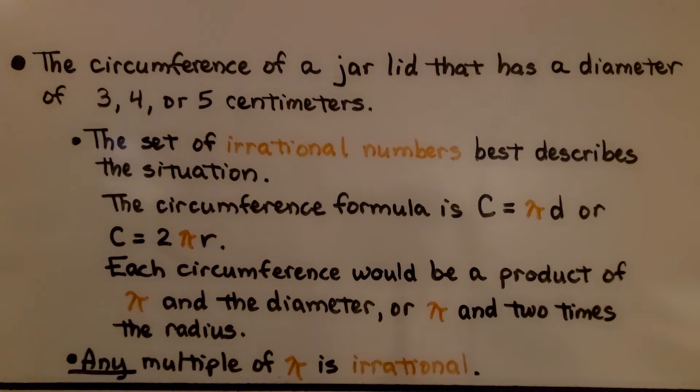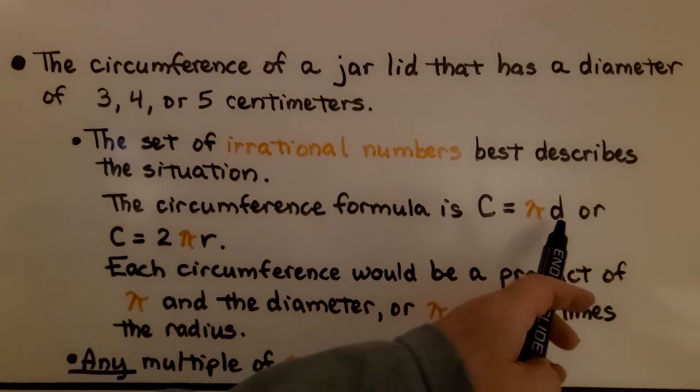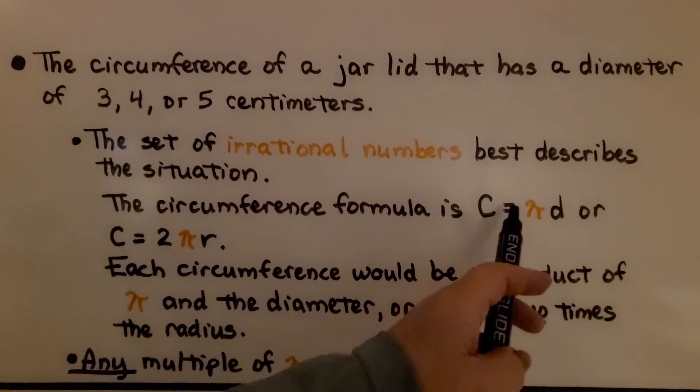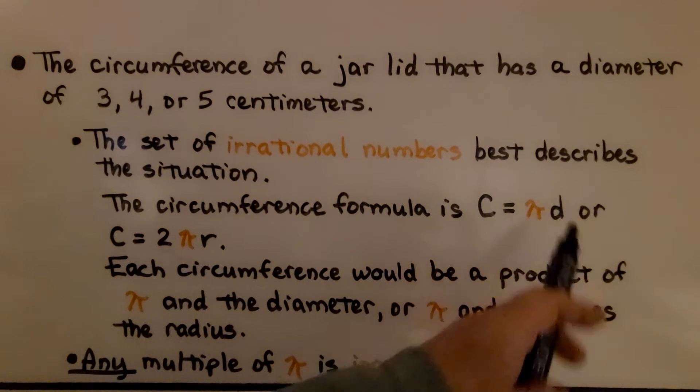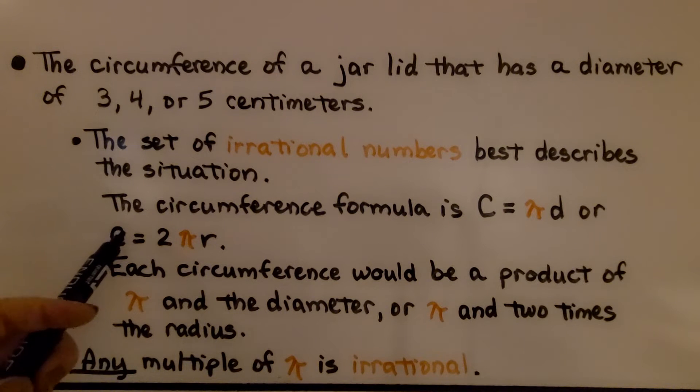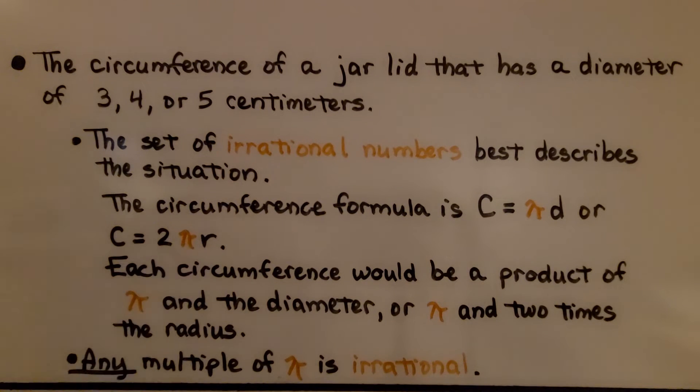So let's see if we can find a set of numbers that describes this situation. The circumference of a jar lid that has a diameter of three, four, or five centimeters. Well, the set of irrational numbers best describes the situation. The circumference formula is C equals pi d, or circumference is equal to two times pi times the radius. Each circumference would be a product of pi and the diameter, or pi and two times the radius. Any multiple of pi is irrational.